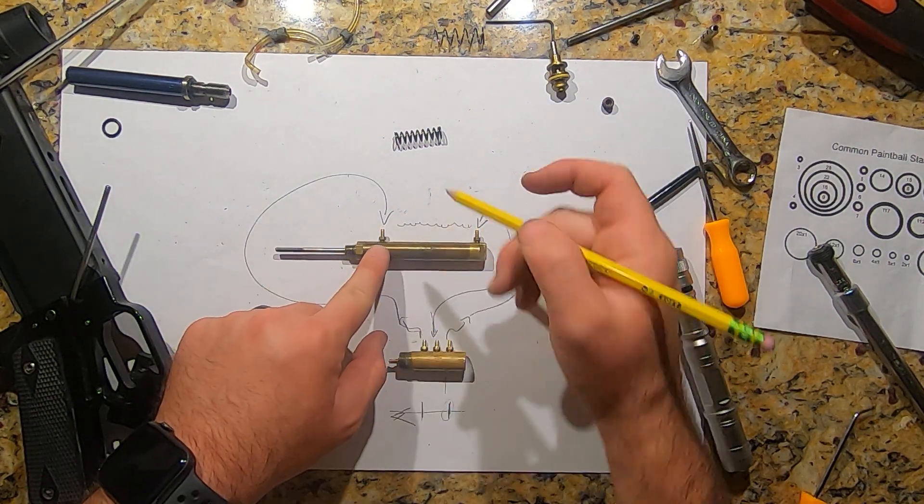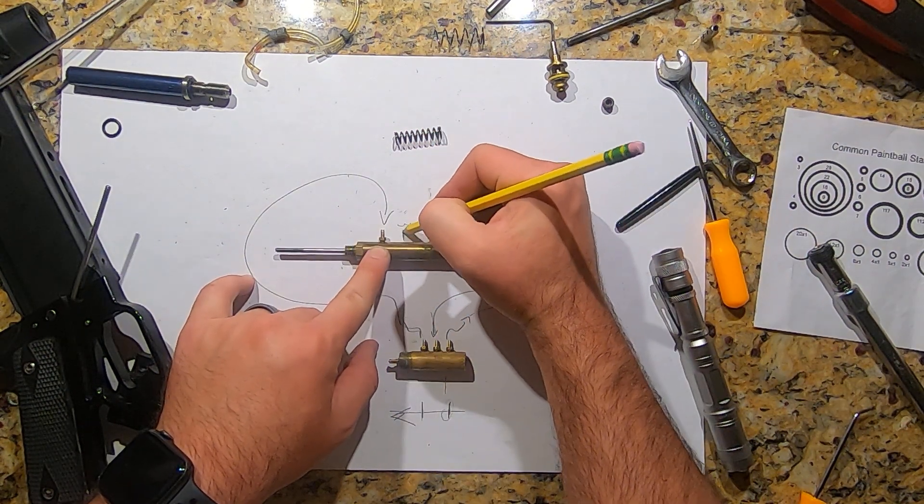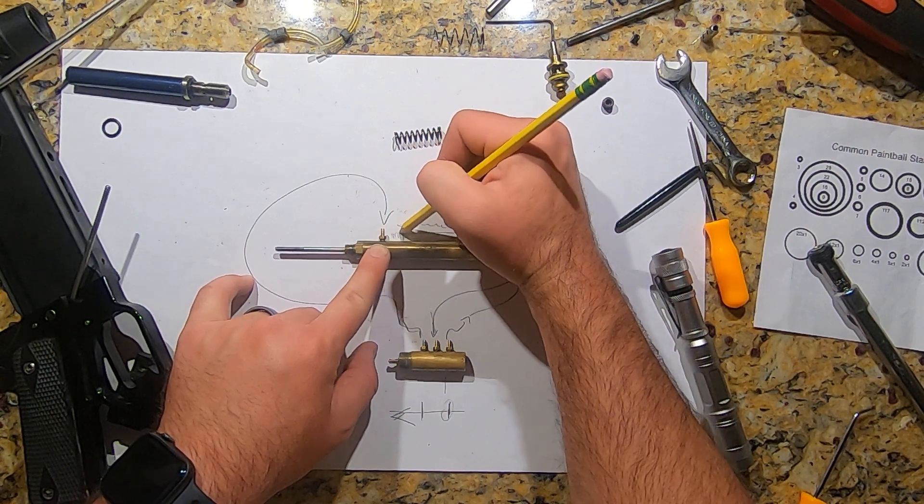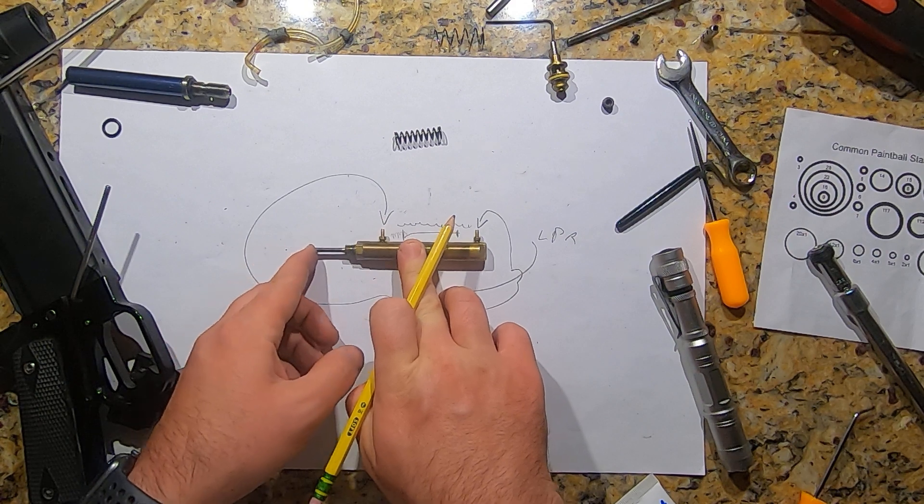As you build air pressure behind - I should have mentioned there is an O-ring in here that slides back and forth - as you build air pressure behind this, it pushes the shaft back forward again, closing the bolt.